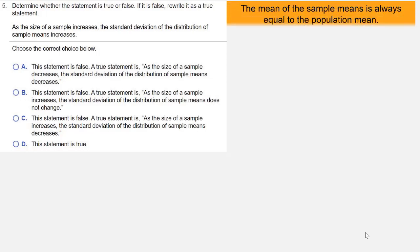So let's look at what we know from the central limit theorem. The mean of the sample means is always equal to the population mean, so μ_x̄ = μ.